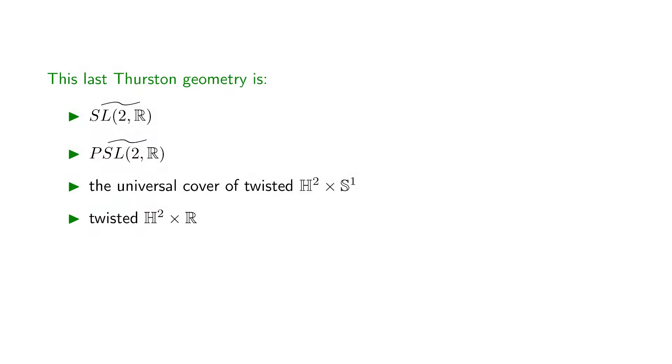To summarize, here are the various ways of looking at this last Thurston geometry. Thurston has called it the universal cover of SL. It is also the universal cover of PSL. It is also the universal cover of twisted H² times S¹, which is simply the twisted H² times R.